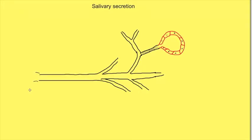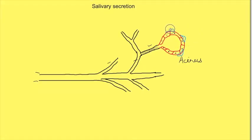Following the duct, we see it branches into smaller ducts which finally end in a blind sac called the acinus. Each acinus is lined by epithelial cells which are surrounded by myoepithelial cells. These myoepithelial cells can contract and help in emptying the secretions from the acinus into the duct. The ducts are also lined by epithelial cells.